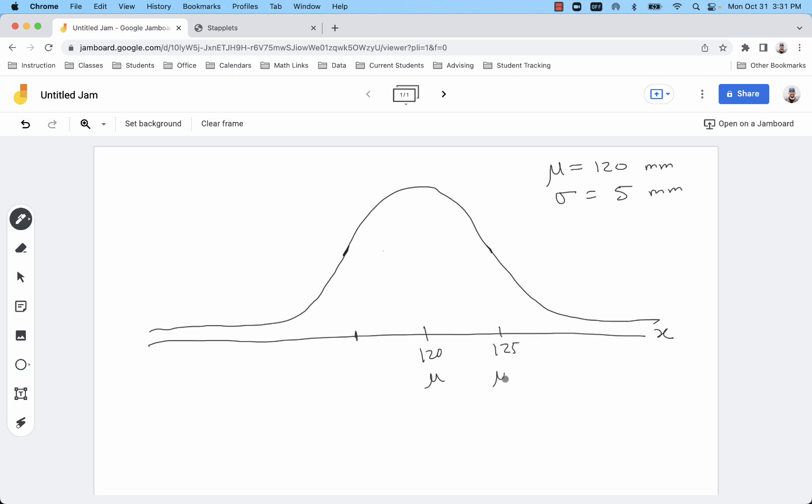So 2 standard deviations, I'm adding 5 twice, or adding 10, takes me to 130, which is mu plus 2 sigma. And then lastly, 135 is mu plus 3 sigma. On the left, we subtract 1 standard deviation, 2 standard deviations, and 3 standard deviations.